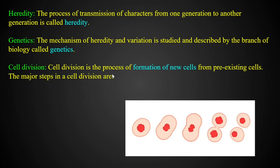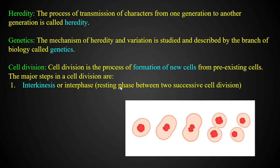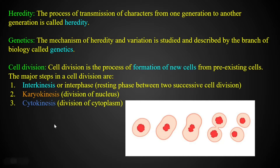Cell division is the process of formation of a new cell from a pre-existing cell. What is the process of cell division? It is divided into interphase, karyokinesis, and cytokinesis. The nucleus divides in karyokinesis, and we can make the space into parts of interphase.